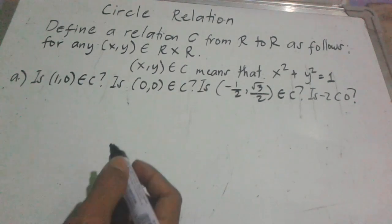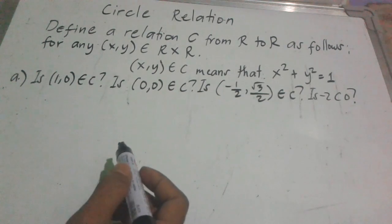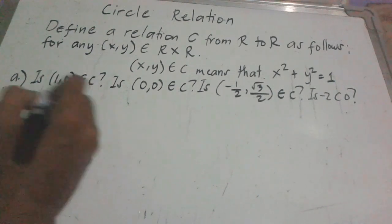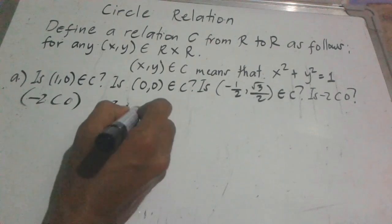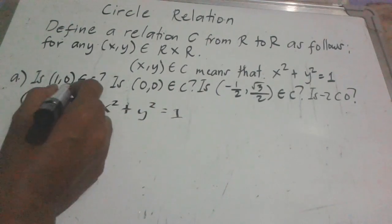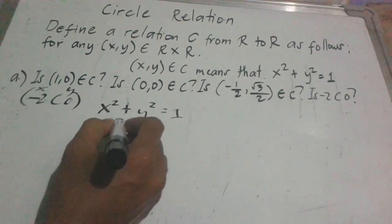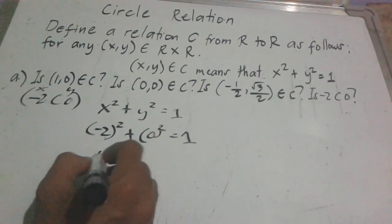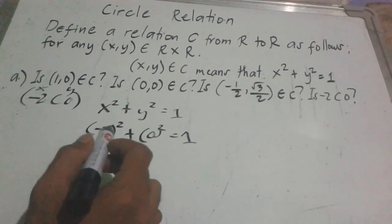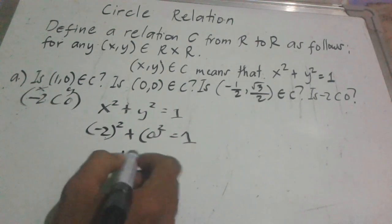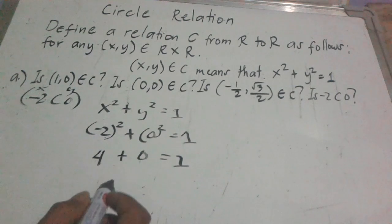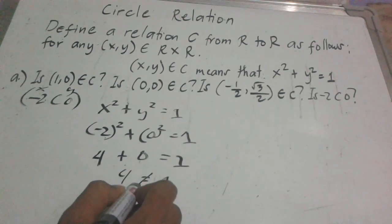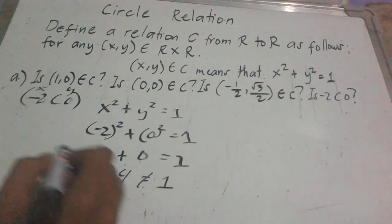The last one is (-2, 0). Is it an element of C? Substituting: (-2) squared plus 0 squared equals 1. Negative 2 times negative 2 is positive 4, plus 0 equals 4, and 4 is not equal to 1. Therefore, (-2, 0) is not an element of C. No.